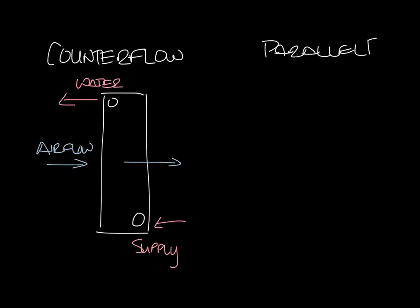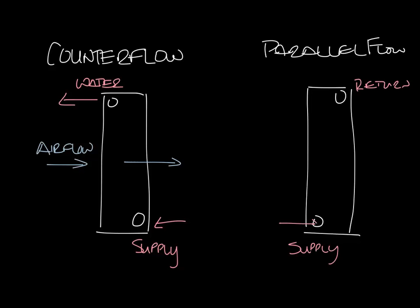In a parallel flow coil, the airflow and water flow are running in the same direction. So it looks like this. Let's draw our coil again. Now we're going to have our supply here and our return here, and the water is moving from the supply to the return in this direction, and then the airflow is moving in the same direction.